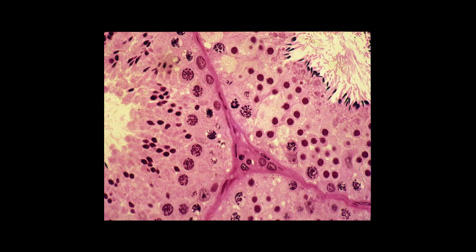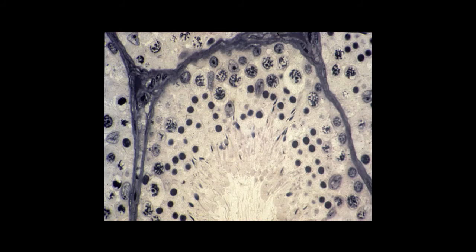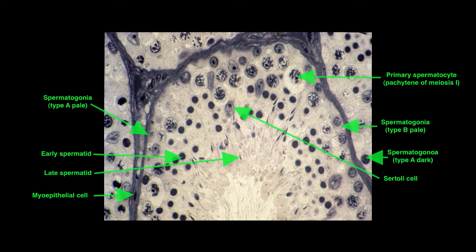Another view of the seminiferous epithelium showing profiles of three tubules. You can clearly see primary spermatocytes in stages of prophase one of meiosis, spermatids at various stages including larger roundish ones, and especially on the left tubule profile, spermatid nuclei beginning to change morphology as they become mature sperm. With an iron hematoxylin stain you can see multiple Sertoli cell nuclei, various stages of spermatocytes, spermatids, and spermatogonial cells along the periphery.